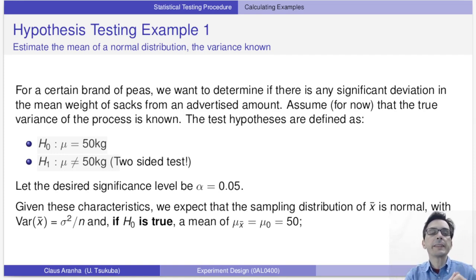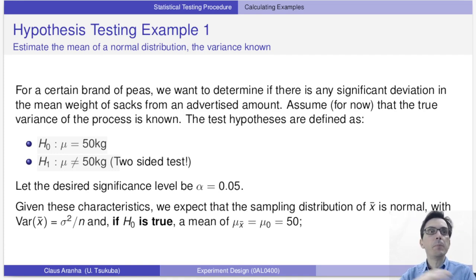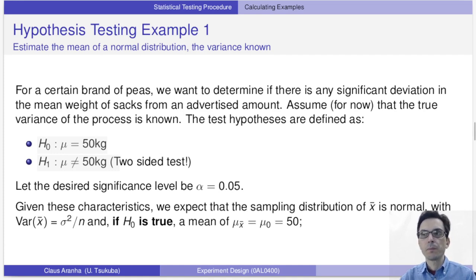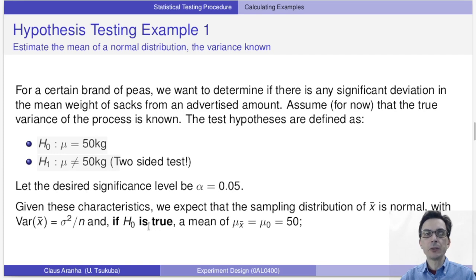We choose the significance value based on the reason for which we are doing the experiment. Our model assumes that the sample distribution of our estimator, the mean weight represented as x-bar, is a normal curve with variance sigma squared divided by the sample size. If the null hypothesis is true, the mean of this distribution is 50.